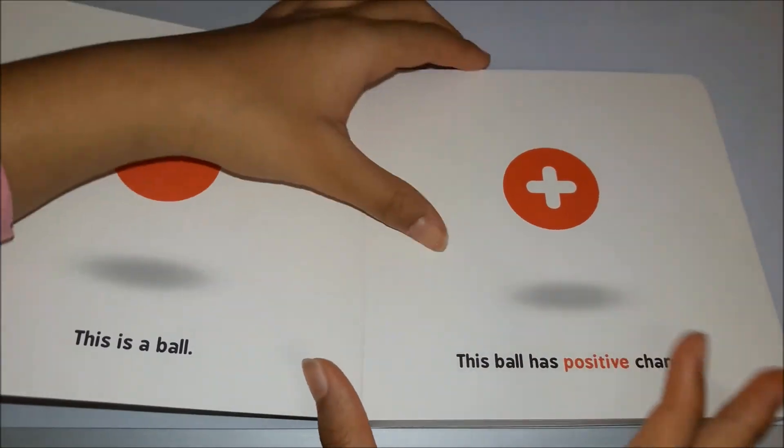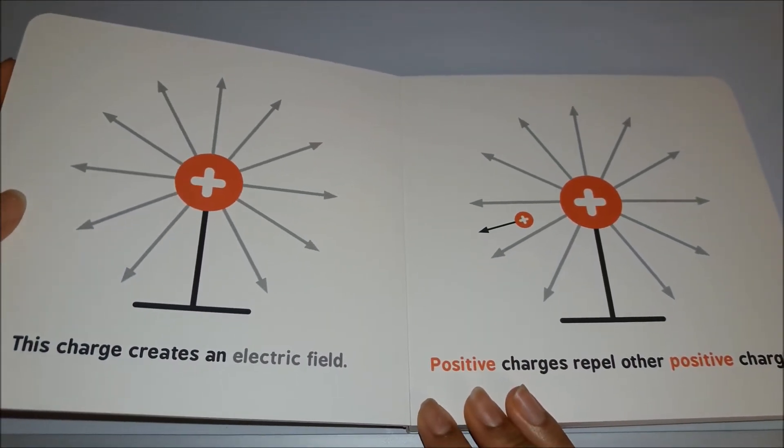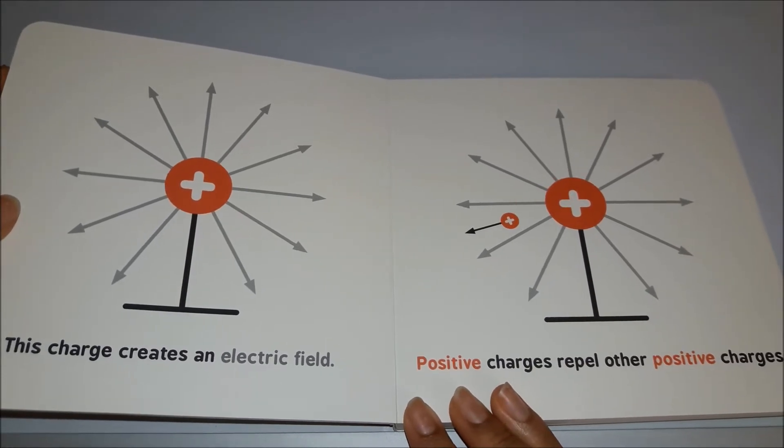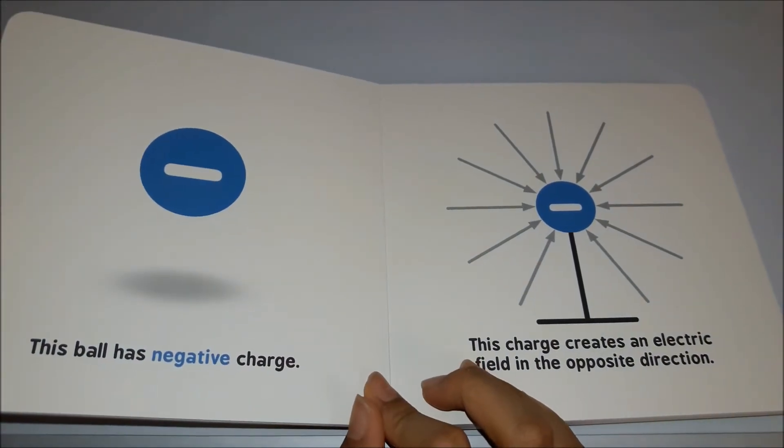This charge creates an electric field. Positive charges repel other positive charges. This ball has a negative charge.